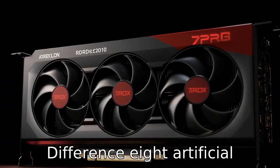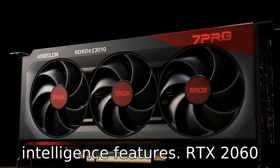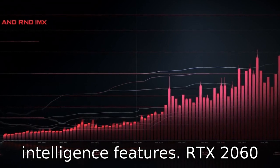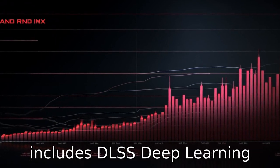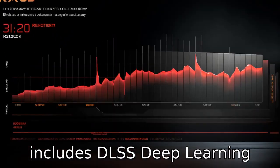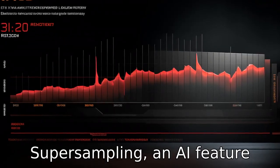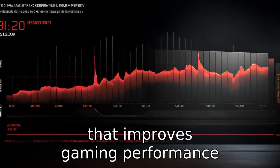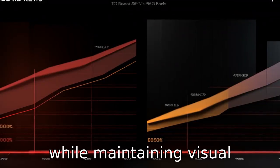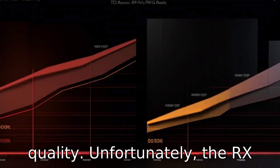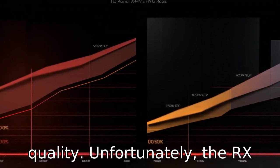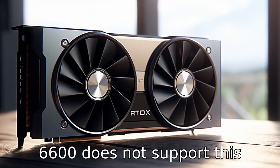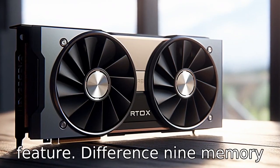Difference 8: Artificial Intelligence Features. The RTX 2060 includes DLSS (Deep Learning Supersampling), an AI feature that improves gaming performance while maintaining visual quality. Unfortunately, the RX 6600 does not support this feature.